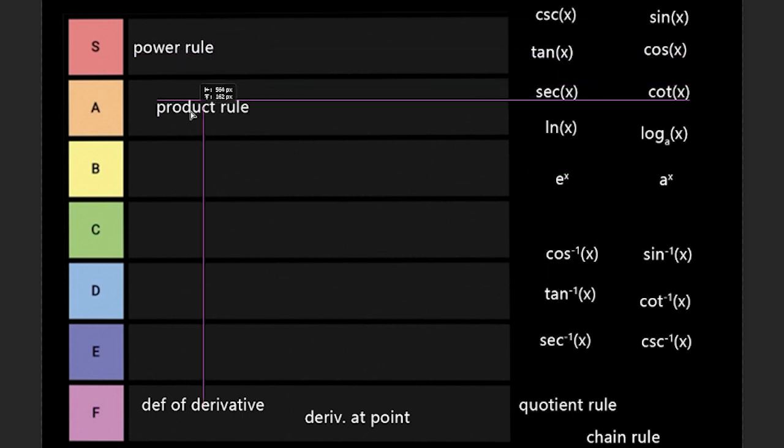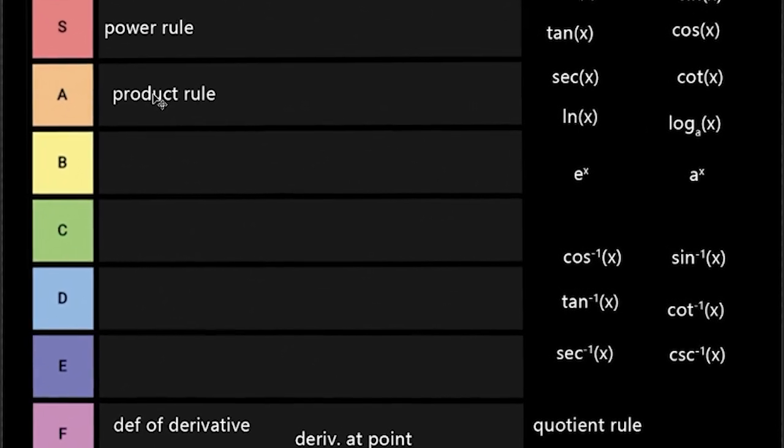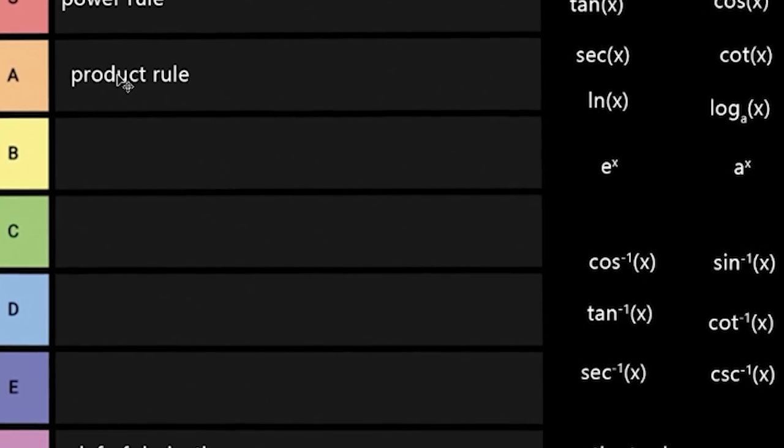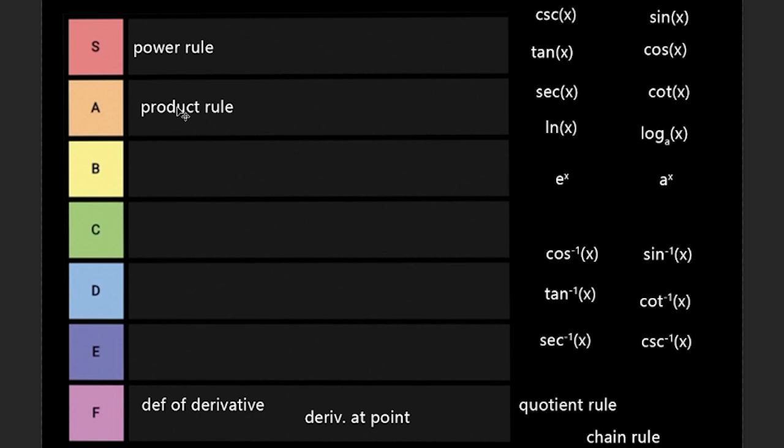Next up is product rule. Product rule, I give this one an A. This is basically where you, if you have two functions being multiplied by each other, you can multiply the first term by the derivative of the second term and then add the second term times derivative of the first. And that's really easy. It's very simple. It doesn't take a lot of memorization and it is pretty important.